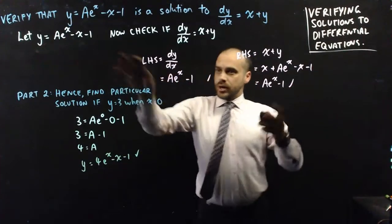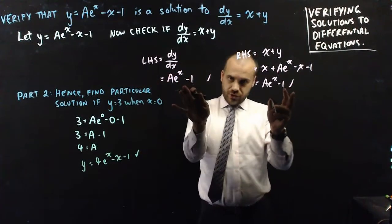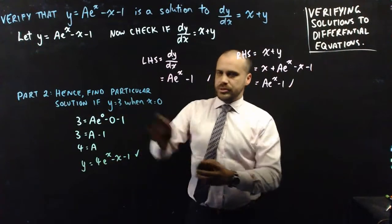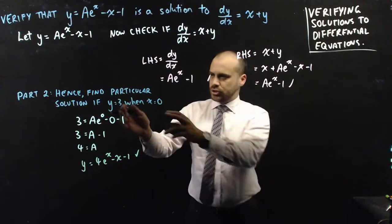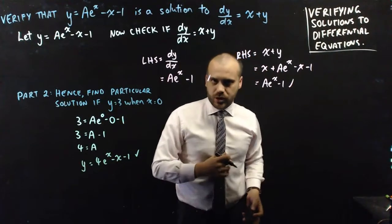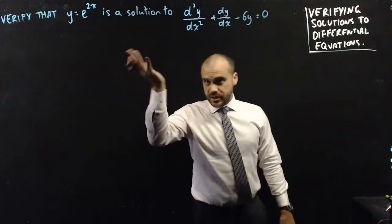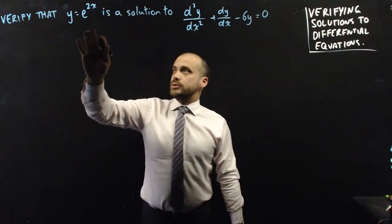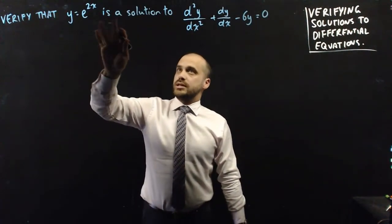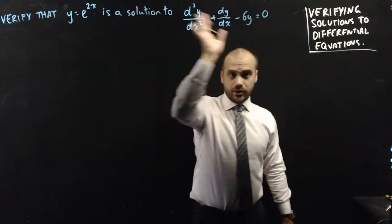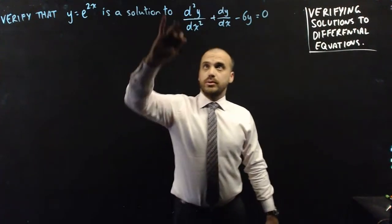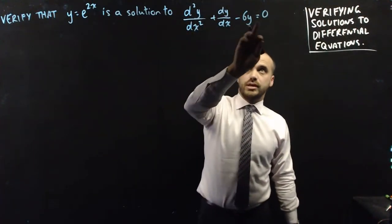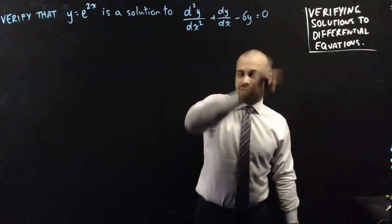So our particular solution is y equals 4e to the x minus x minus 1. We did part 1 by verifying the solution was true, and part 2 by finding the particular solution given some values for x and y. Here's a second, more complicated example: verify that y equals e to the 2x is a solution to the equation with a second derivative plus the first derivative minus 6y equals 0.